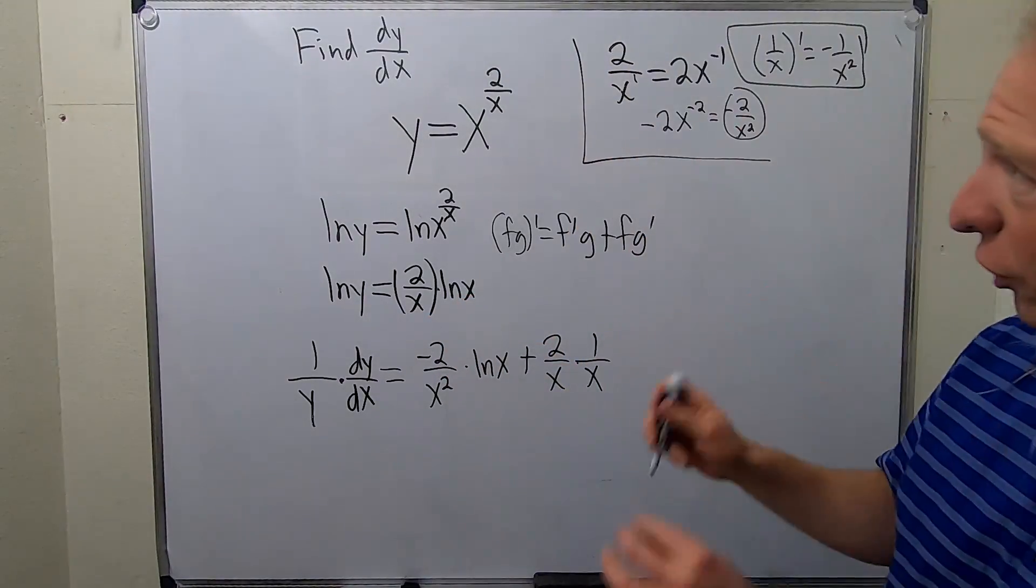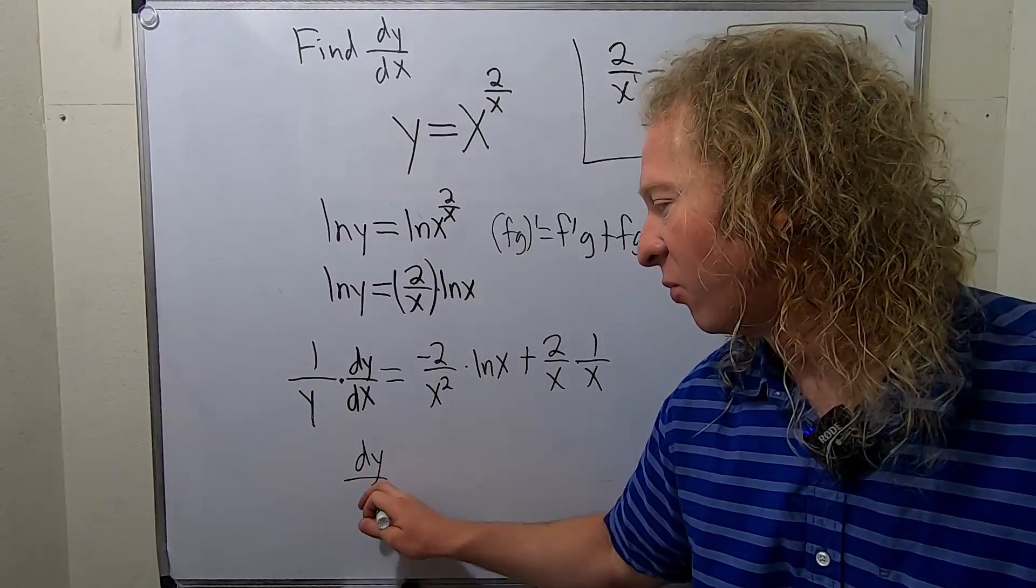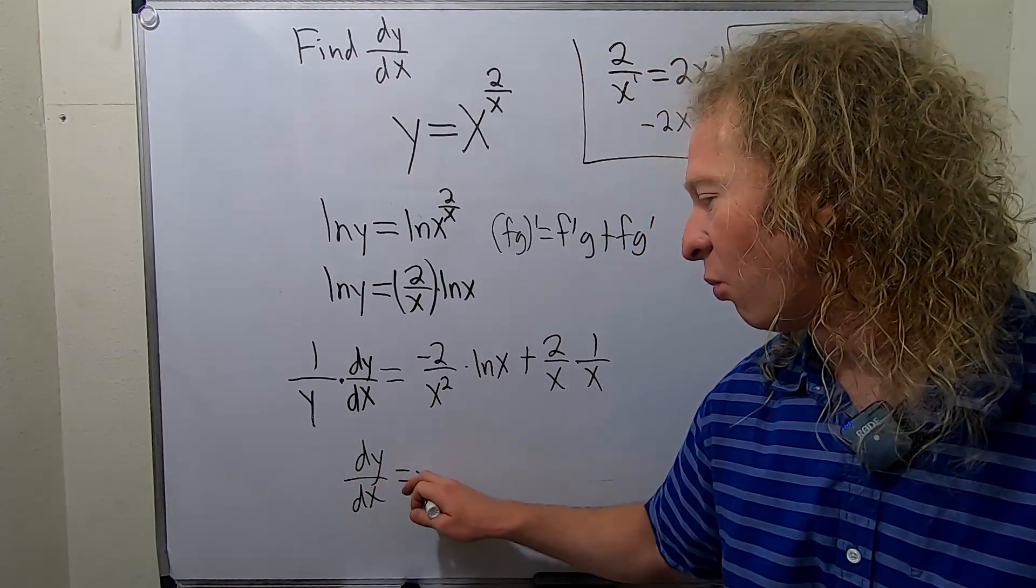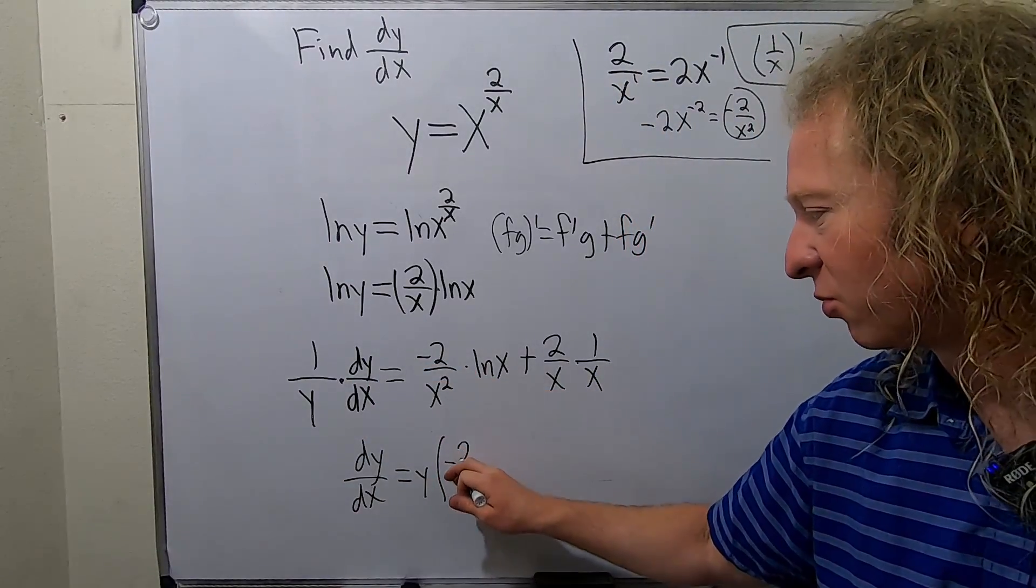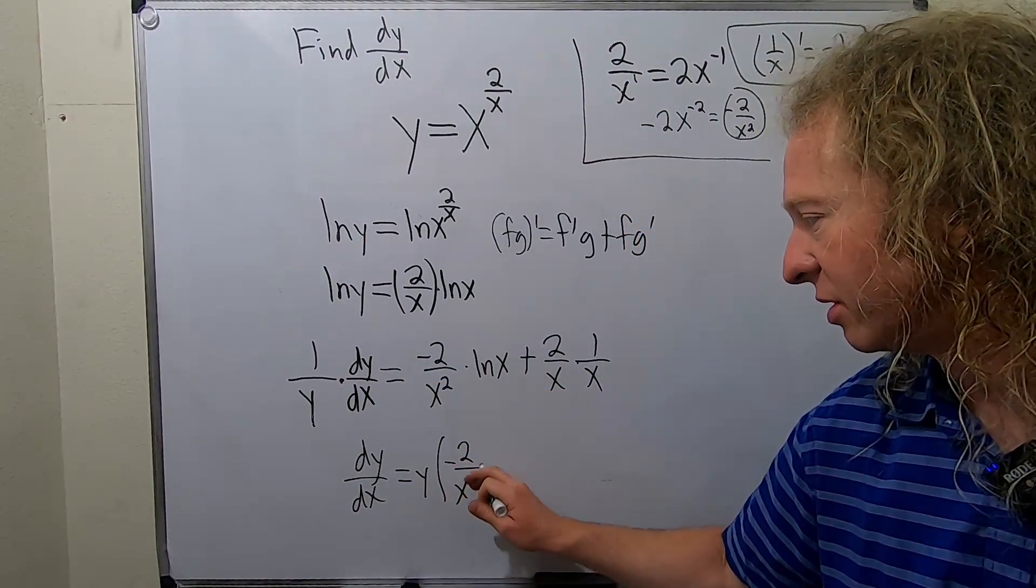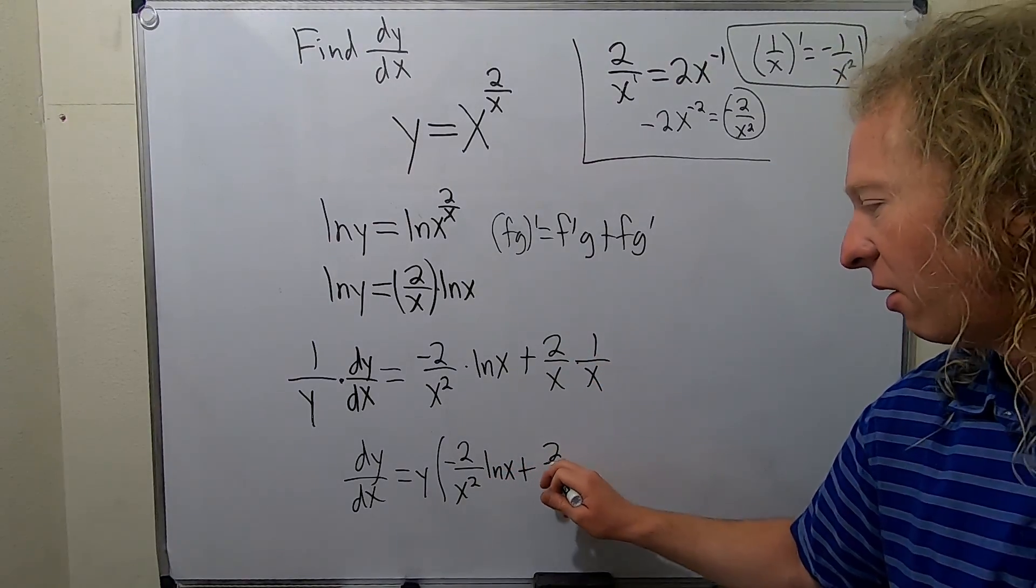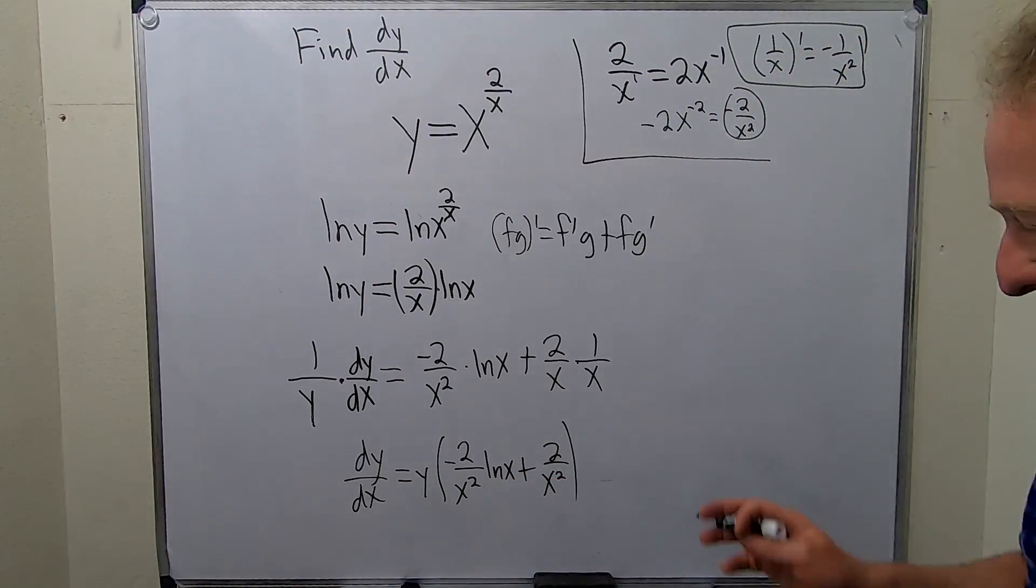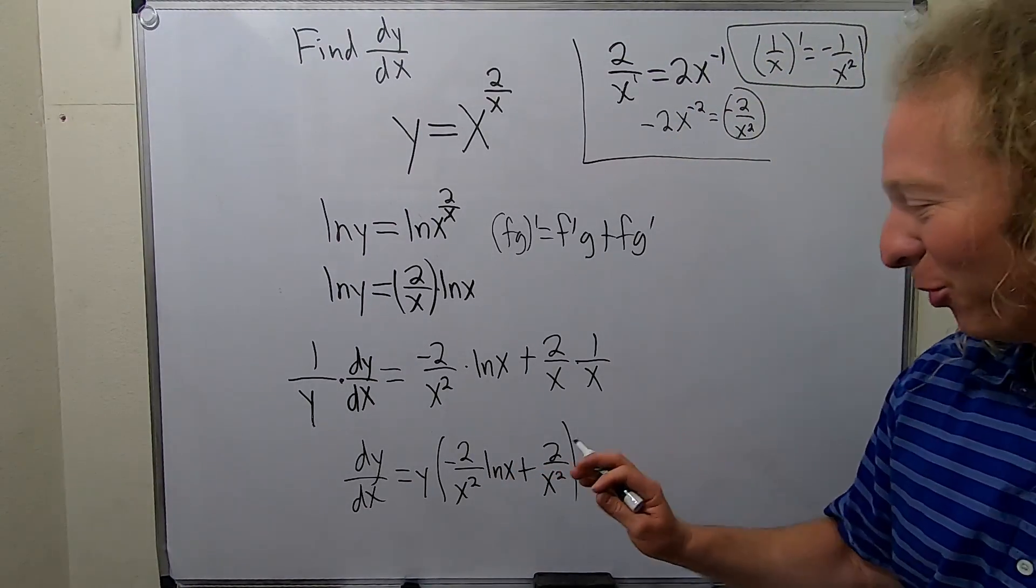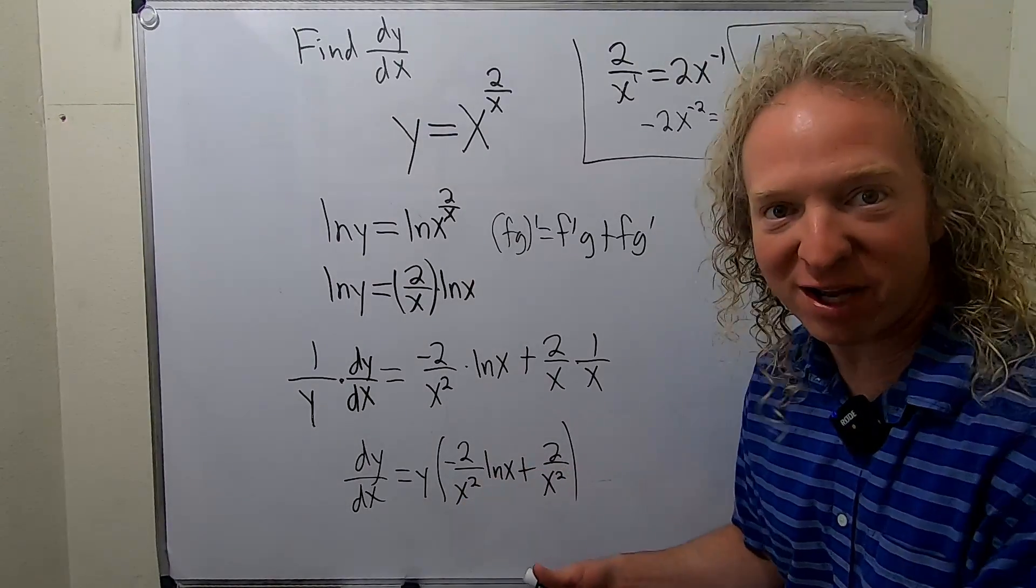We're almost done. We're looking for dy/dx. Let's multiply both sides by y, so we have dy/dx equals y times all of this. It's a lot of writing, but it's worth it, builds character. This is ln x, and this is 2 over x squared. Look at that, it's all over x squared. We'll leave it for now. So that's kind of convenient because you can actually combine the fractions.